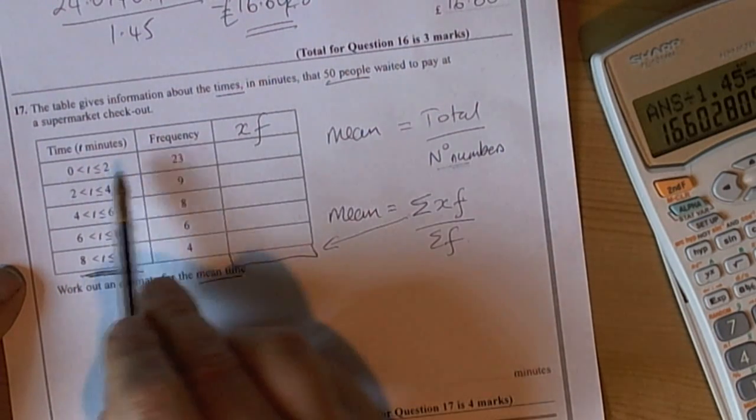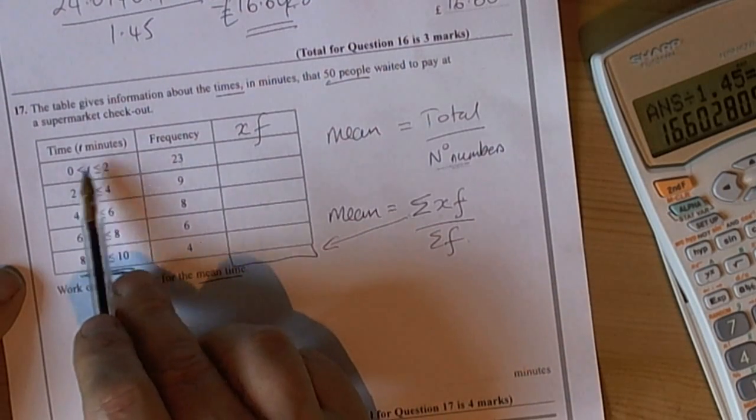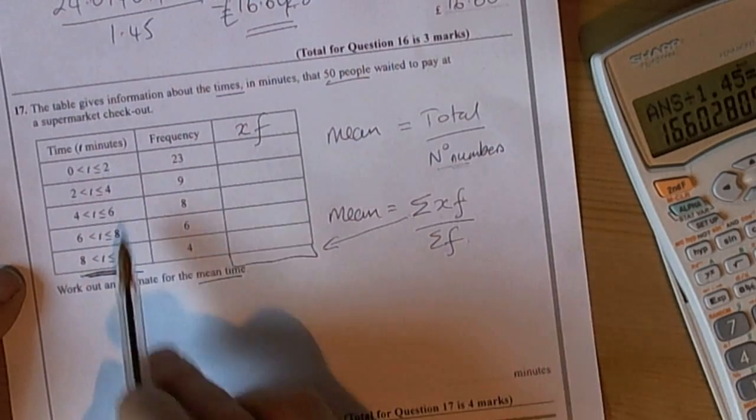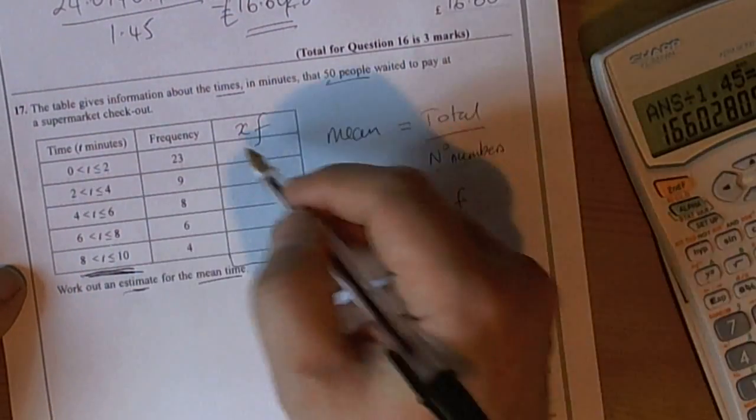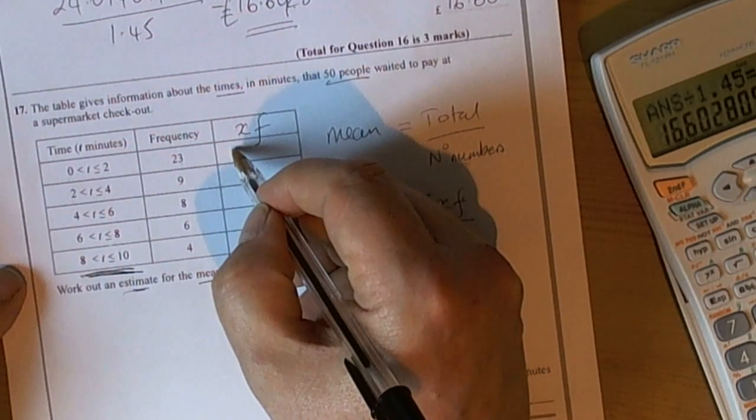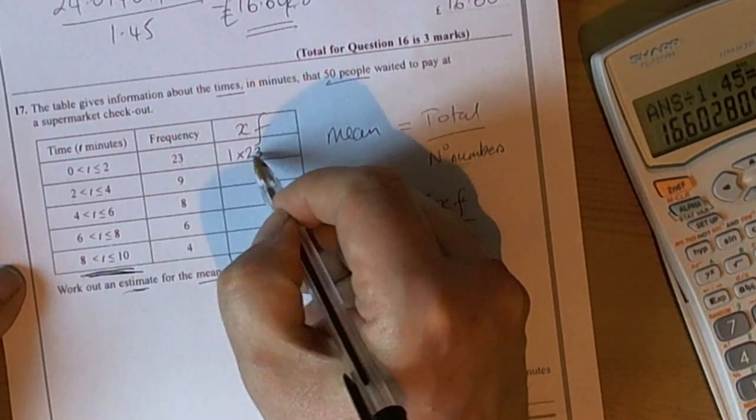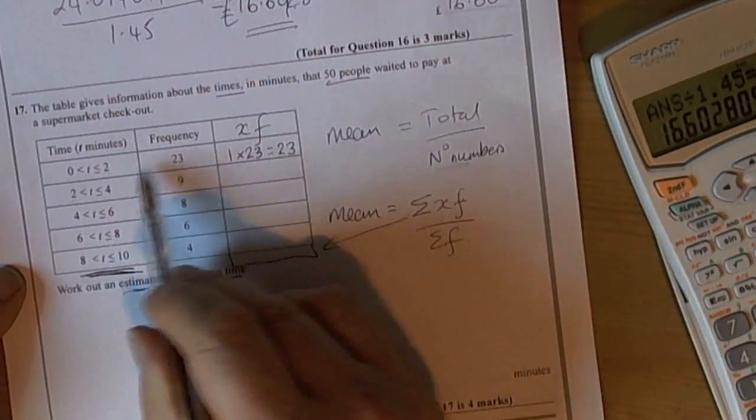But to use 2 would be an overestimate because some people were slightly below the average time in this interval and some above. So the word 'estimate' is suggesting we use the midpoint. So for the variable we're going to do 1 minute times 23. We're estimating these 23 people took 23 minutes of time to wait to pay.